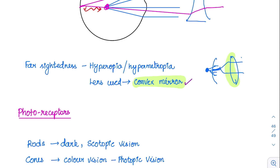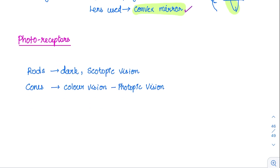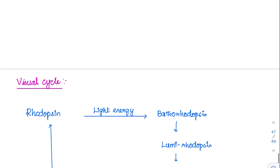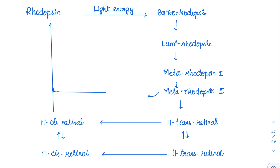There are two types of photoreceptors. Rods are for dark vision, also called scotopic vision — when seeing objects in the dark. Cones are for color vision, also called photopic vision. Now coming to the visual cycle, which is very important — we have to know all the important components.